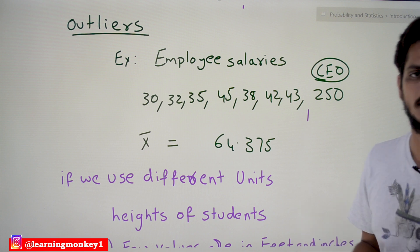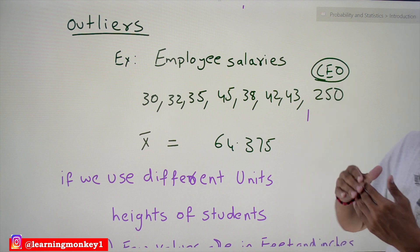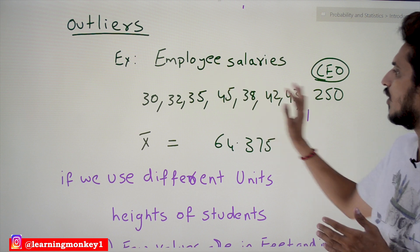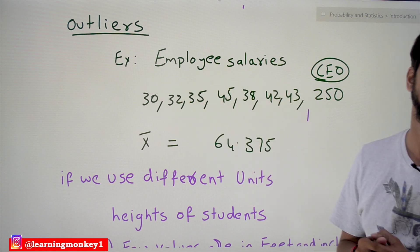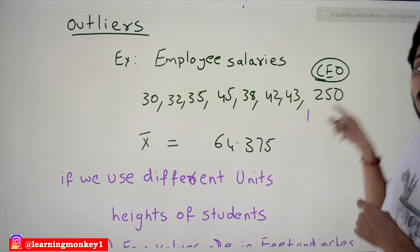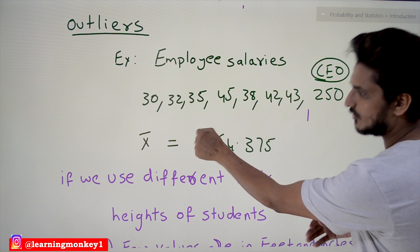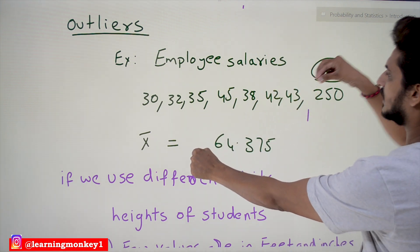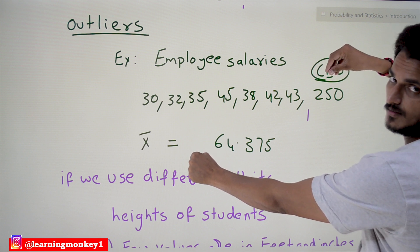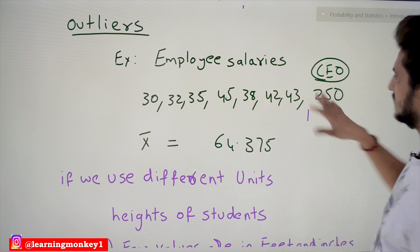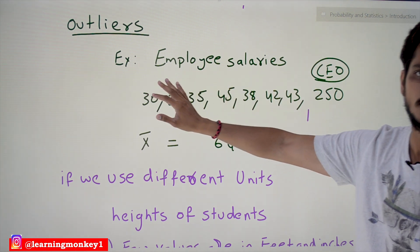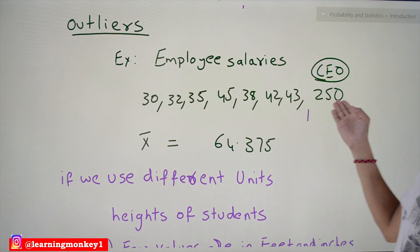See here, this data is very much away from all these data points. This is what we call as outlying point. Most of the data points are somewhere around here; only a few data points are somewhere around here—these are the outlying points. The same way, most of the salaries are around 30 to 40,000; only one salary is around 250,000.